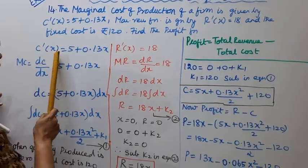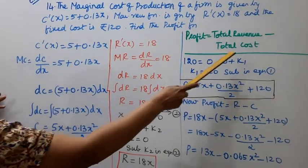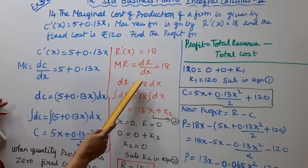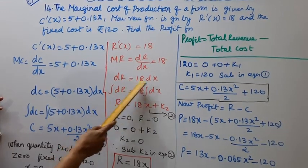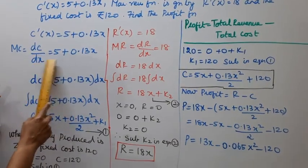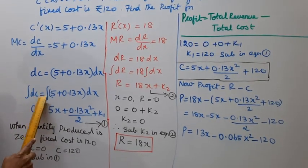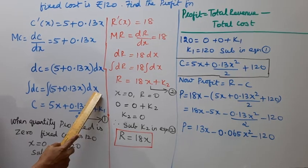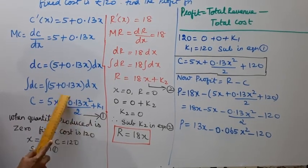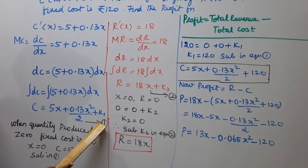C'(x), that is marginal cost DC/DX = 5 + 0.13x. Now integrate. Integrating DC = integration of (5 + 0.13x) DX. This gives C = 5x + 0.13x²/2 + K1. This is equation 1.